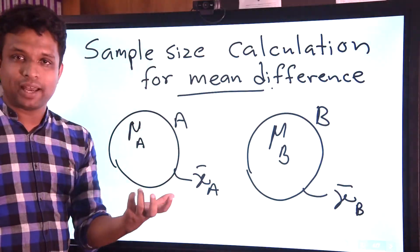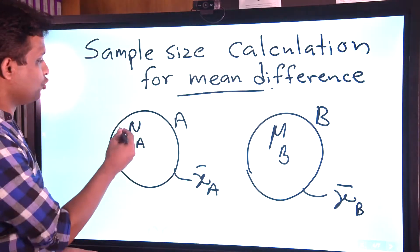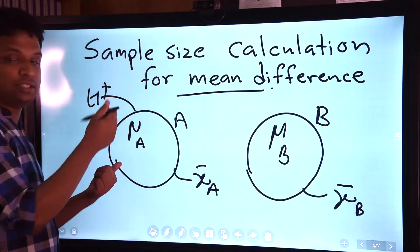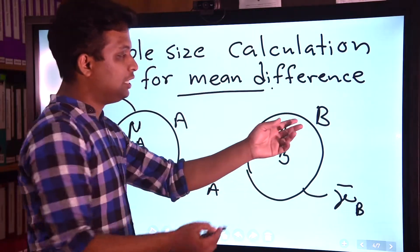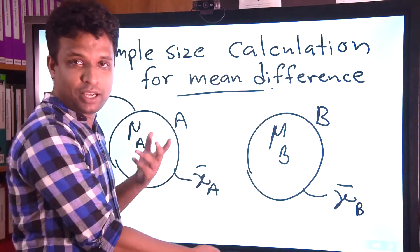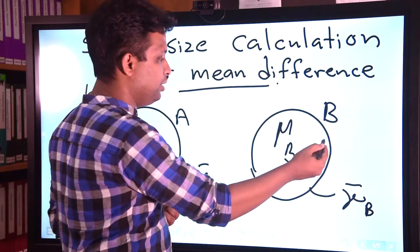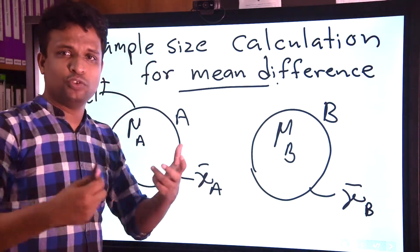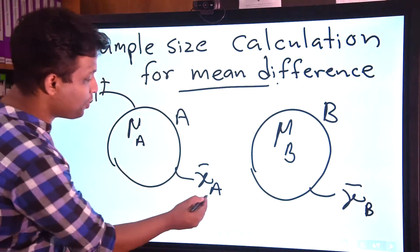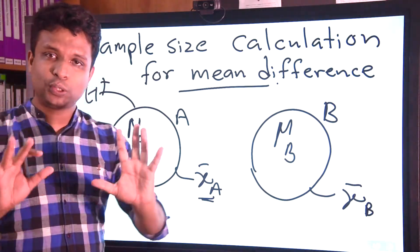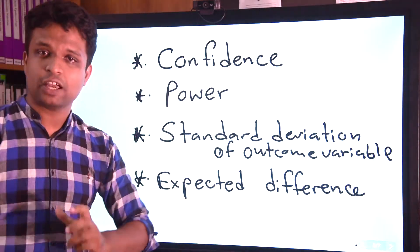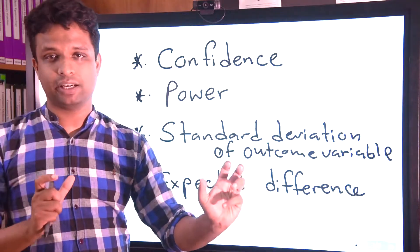Assume that we need to compare two populations in relation to height. We have population A with population mean height mu-A, and population B with population mean height mu-B — for example, comparing two countries like Korea versus the United States or Japan versus China. Since we can't compare population means directly, we take samples from both populations, giving us X-bar-A and X-bar-B. Now we need to know what factors affect the sample size when comparing two means.